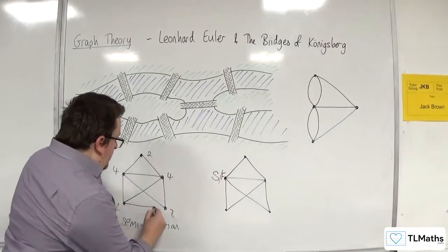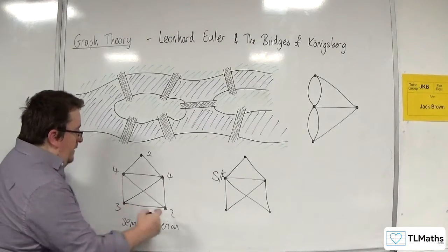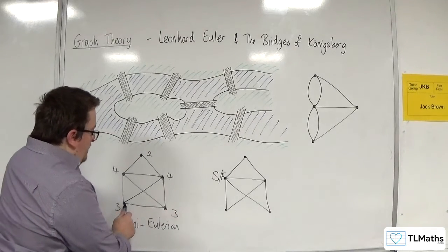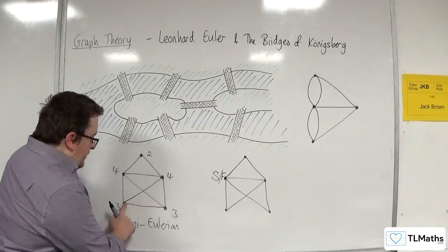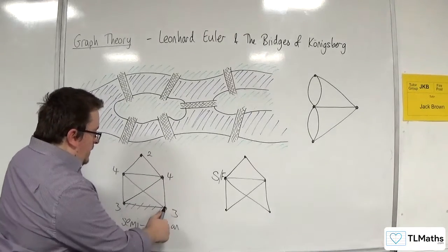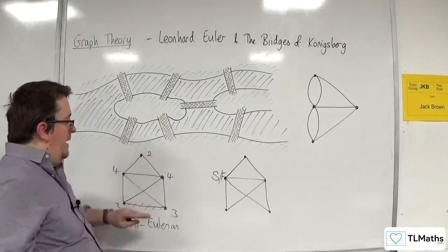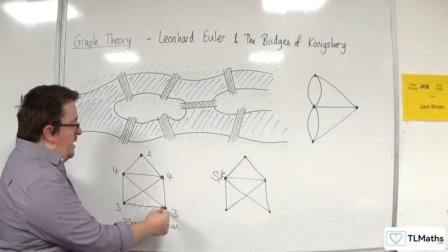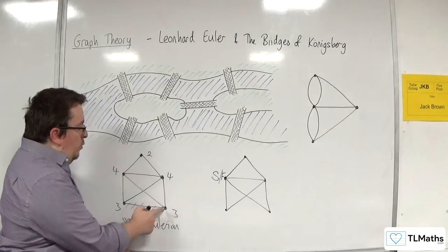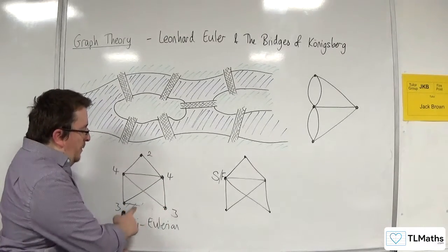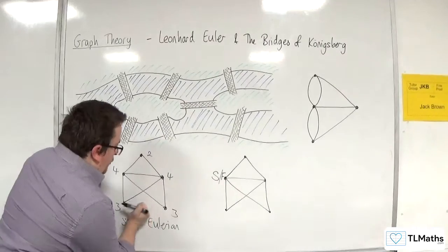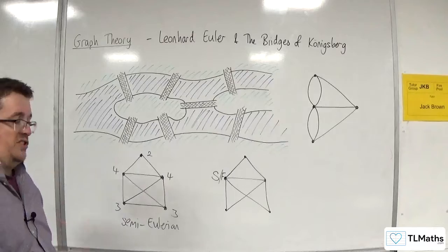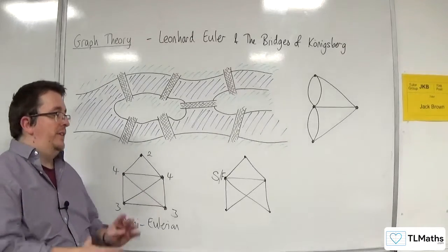If it is semi-Eulerian, the way that you start is you start from one of the odd vertices. And once you have gone and taken out that one and you've gone along that one, you now have every vertex has even order. And that means that you can then trace out the shape and you return to that point. So you'll always return to the opposite one, the other odd vertex. So a semi-Eulerian graph requires you to have precisely two odd vertices. It doesn't work with more.